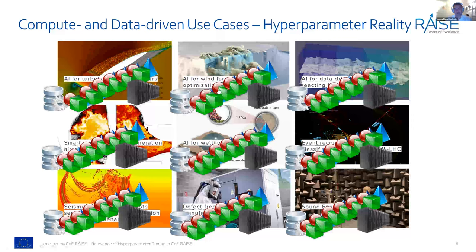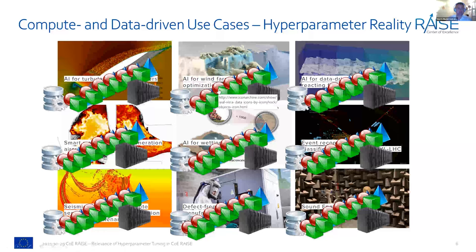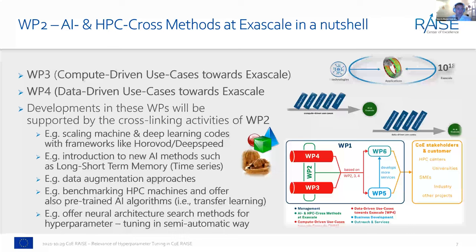Just to give the reality of what hyperparameters are, and why they're relevant for RACE use cases: when it comes to WorkPackage 2, which focuses on AI and HPC cross-methods, we think about scaling machine learning and deep learning codes with frameworks like Horovod or the native framework in PyTorch. DeepSpeed is something we've recently looked into, though it's not running well on HPC at the moment.